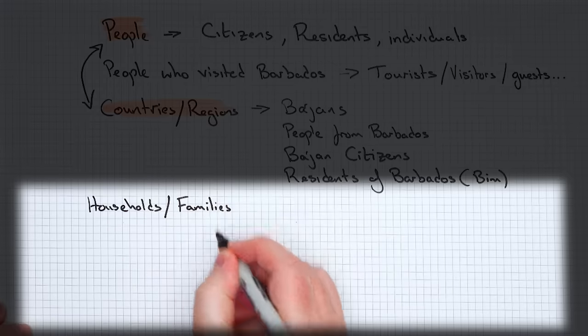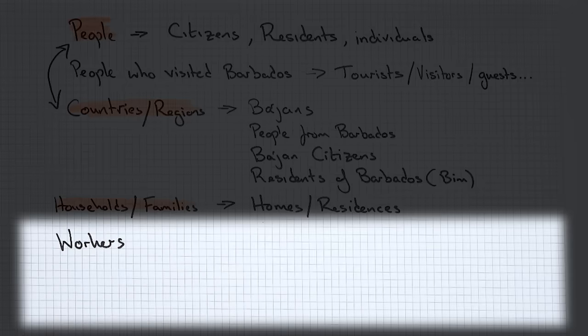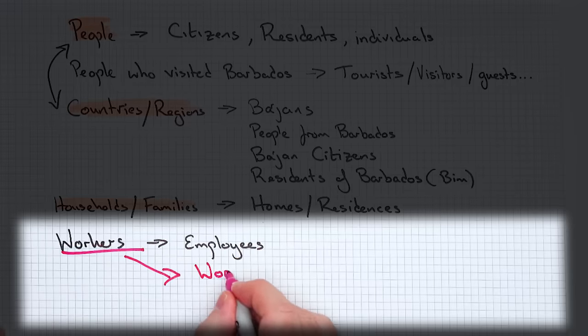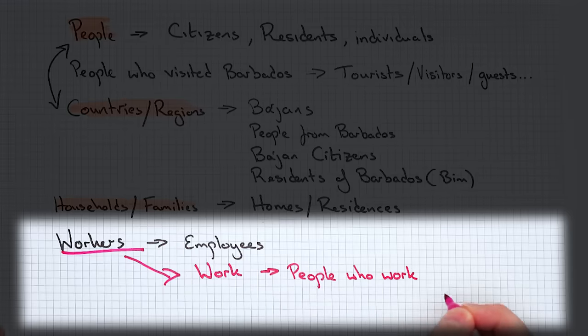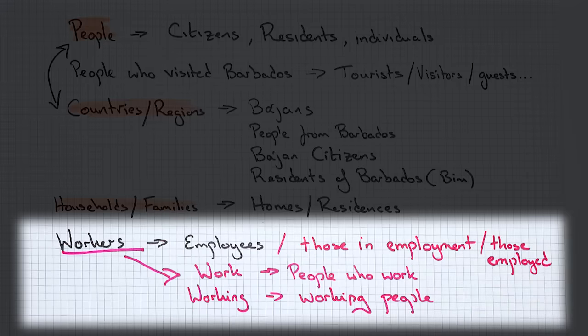Next we have 'households' and 'families.' These can be used interchangeably, but you could also use 'homes' or 'residences.' I want to show you how you can not only use synonyms but also change the form of the word. For example, let's say it is about 'the number of workers.' A synonym is 'employees.' But you can also change the form — change 'workers' to 'work.' How could we say that? 'People who work,' or 'working people.' Or take 'employees' to 'those in employment.'